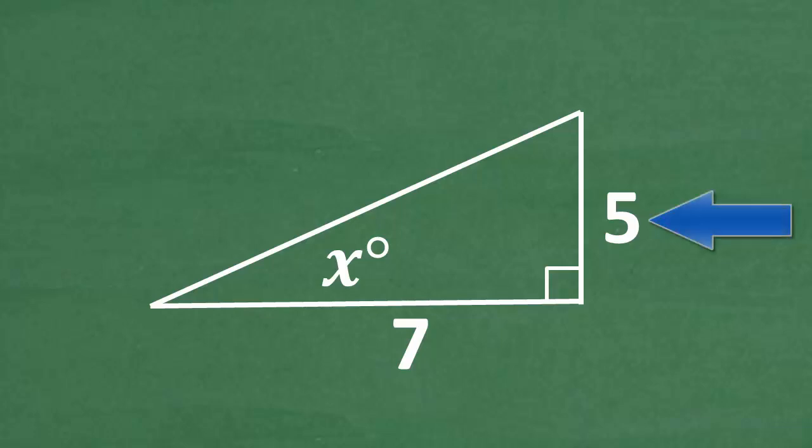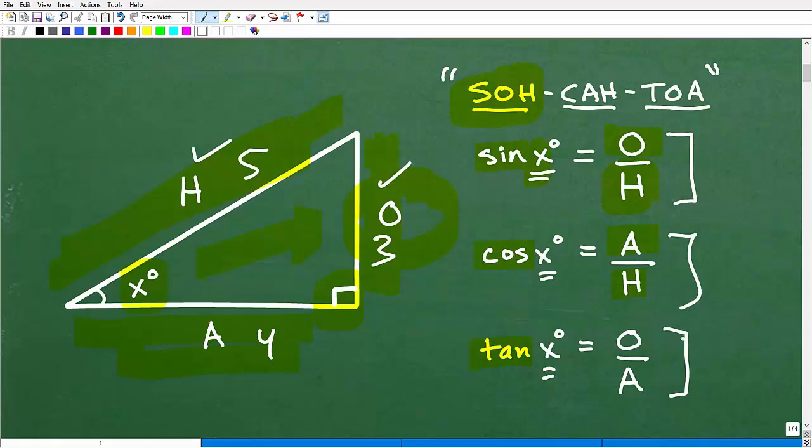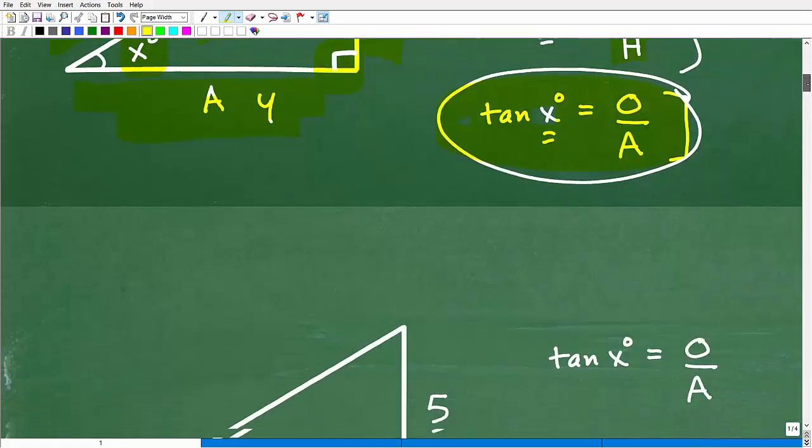Well, this is the opposite and this is the adjacent. So I'm going to need to use the trigonometric function that involves the opposite and the adjacent. Let's take a look at our options. Which one involves the opposite and the adjacent? If you said tangent, I would say fantastic. You're paying attention and that is exactly right. We need to use the tangent. Let's get to the problem.